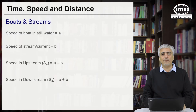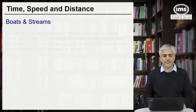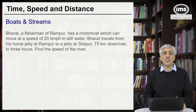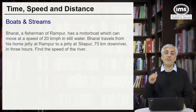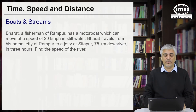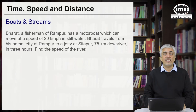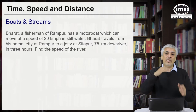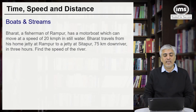Let's take one or two examples. Bharat, a fisherman of Rampur, has a motorboat which can move at a speed of 20 km per hour in still water. Bharat travels from his home jetty at Rampur to a jetty at Sitapur, 75 km down the river — meaning he is traveling downstream — in three hours. Find the speed of the river.